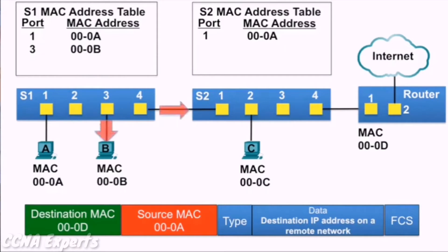PCB receives the Ethernet frame, and because the destination MAC address does not match its own MAC address, it does not accept the rest of the frame.